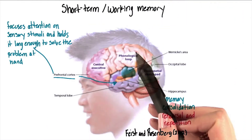In short-term memory, some of the information from sensory memory is transferred to short-term memory. Short-term memory allows one to recall something for as long as a minute without rehearsal, and its capacity is also limited. For example, remembering a phone number while dialing — the number stays in memory a short period of time, and after dialing we may forget it.